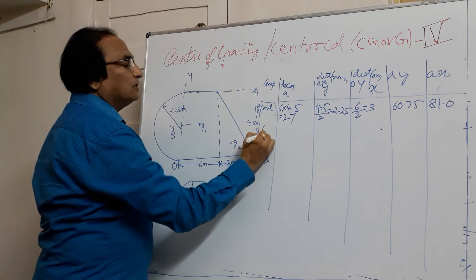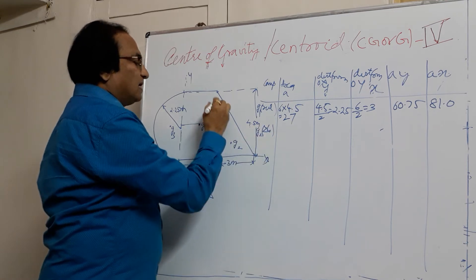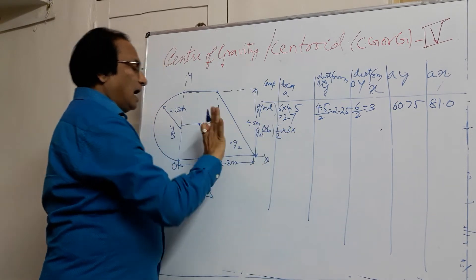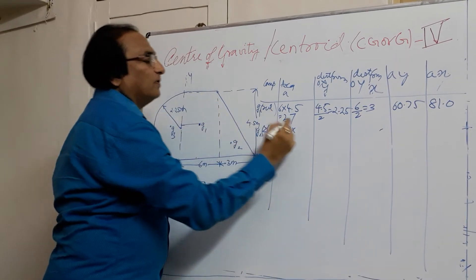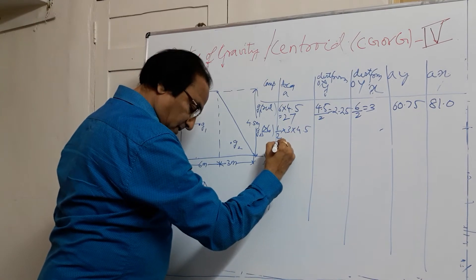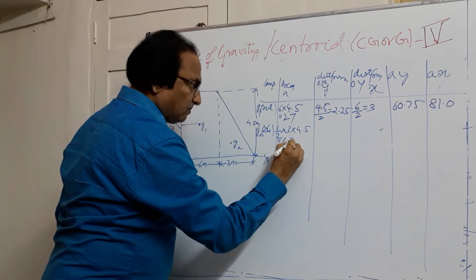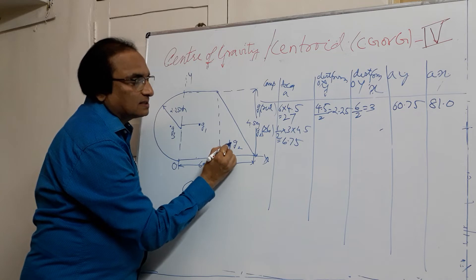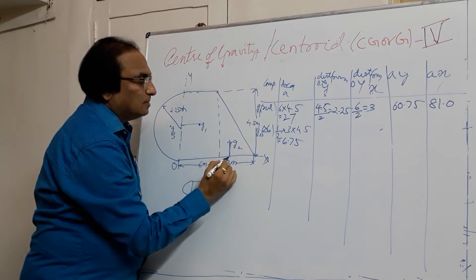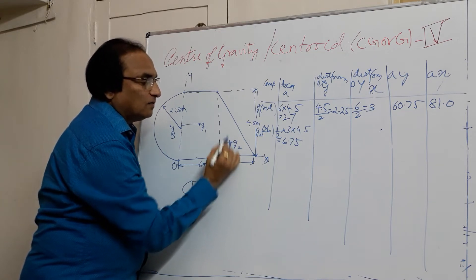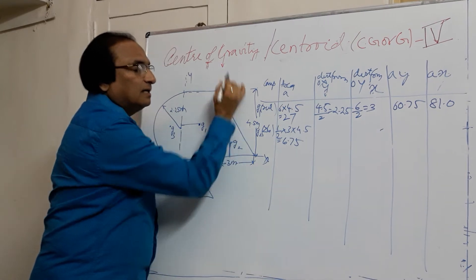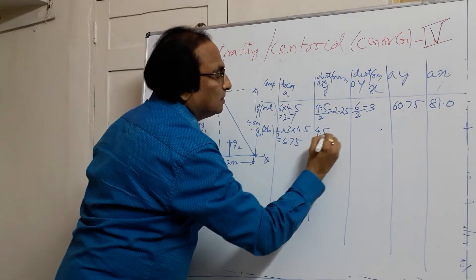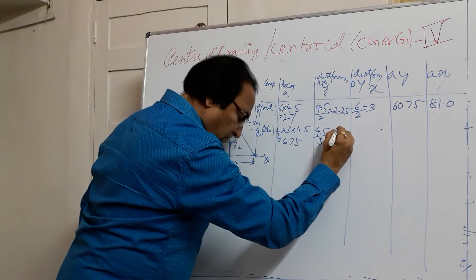Next we go to G2, which is a triangle. The area of a triangle is half times base times height — half into base 3 and height 4.5 — giving 6.75. Now I need the distance of the centroid from OX. For a triangle, the centroid is one-third of the height from the base. The height here is 4.5, so 4.5 divided by 3 equals 1.5 meters.